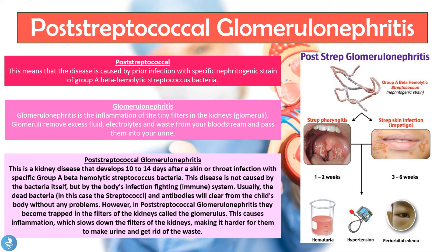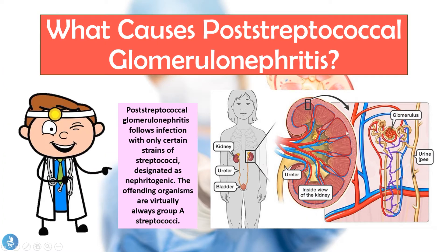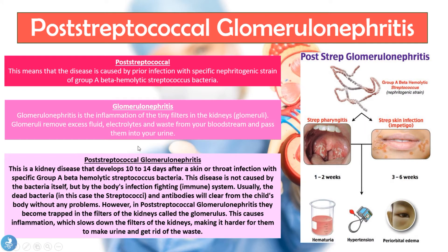If we take a closer look at the word 'glomerulonephritis,' this is actually the inflammation of the tiny filters in the kidneys which are called the glomeruli. The nephron is the functional unit of the kidney, and this is what the glomeruli or glomerulus looks like. The glomeruli remove excess fluid, electrolytes, and waste from our bloodstream and pass it into the urine. When we have glomerulonephritis, we have inflammation of these glomeruli and nephron, so all those functions begin to deteriorate.